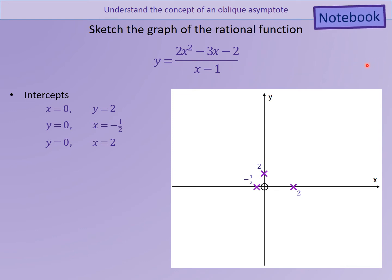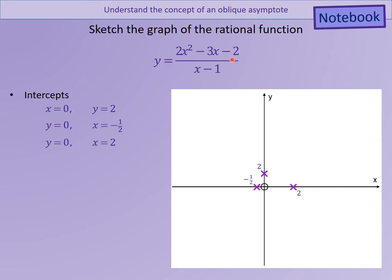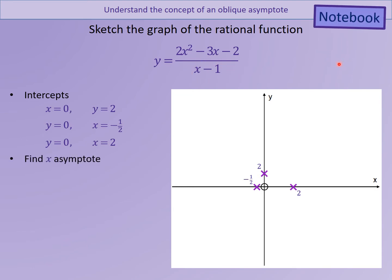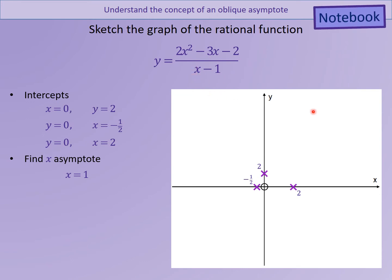What we can look at now — and you could have done this in either order — is look at where the asymptotes are. This has got an asymptote quite clearly because you're dividing. So we can look at when is that denominator equal to 0. In this case, when x equals 1, that denominator equals 0. Therefore, we can put in an asymptote at x equals 1.